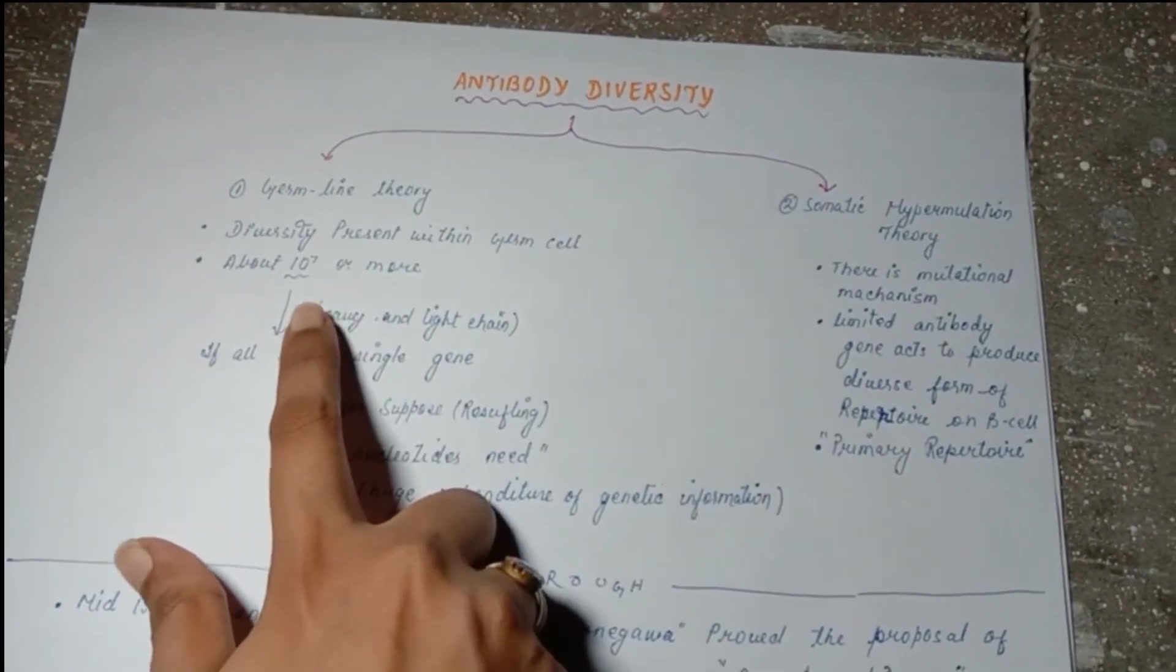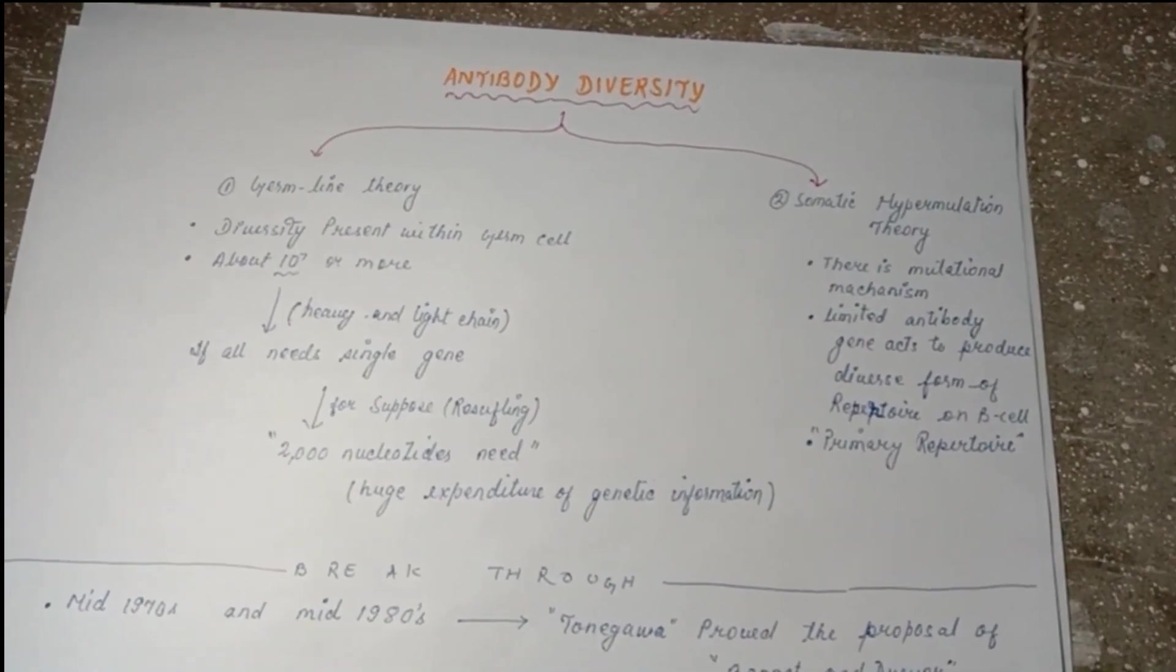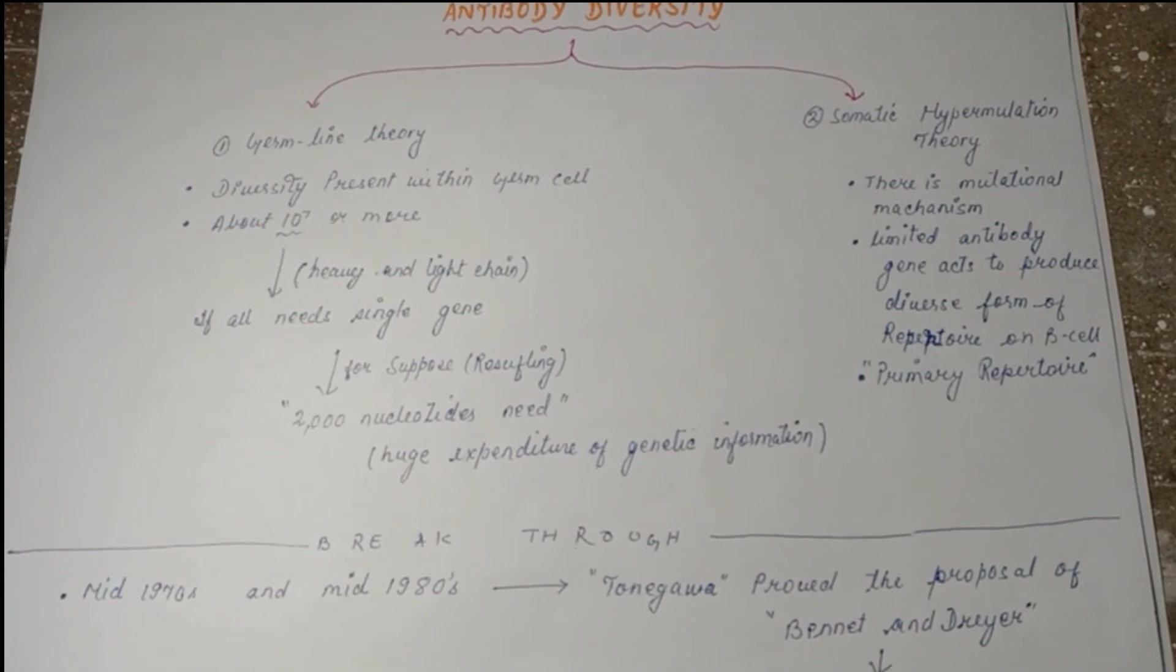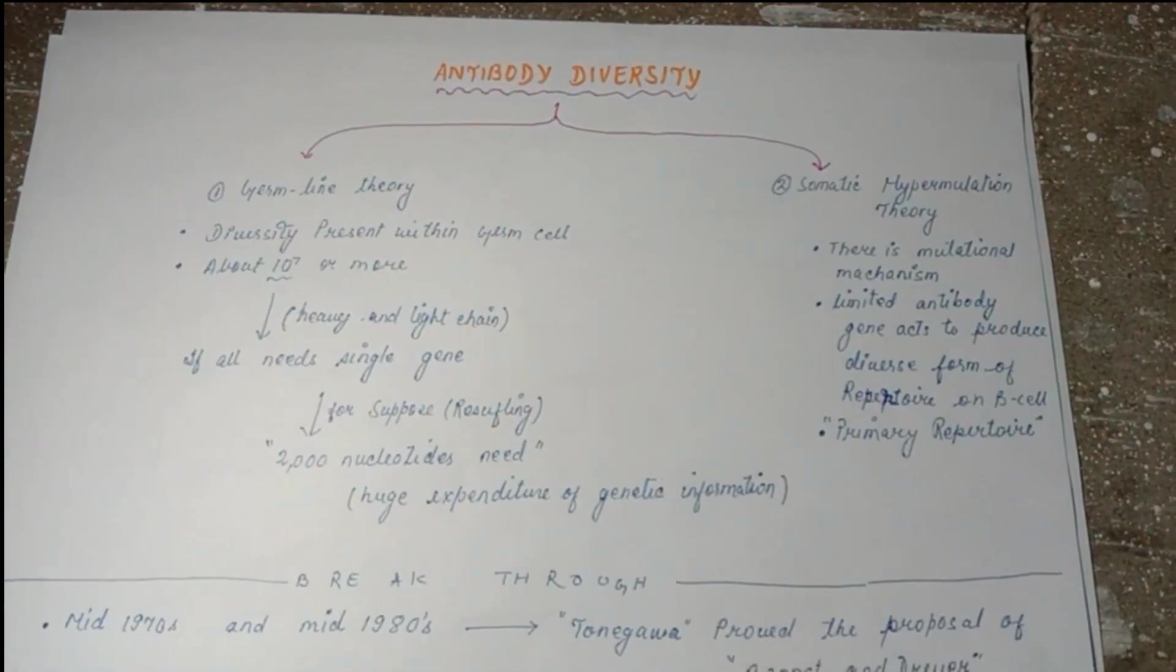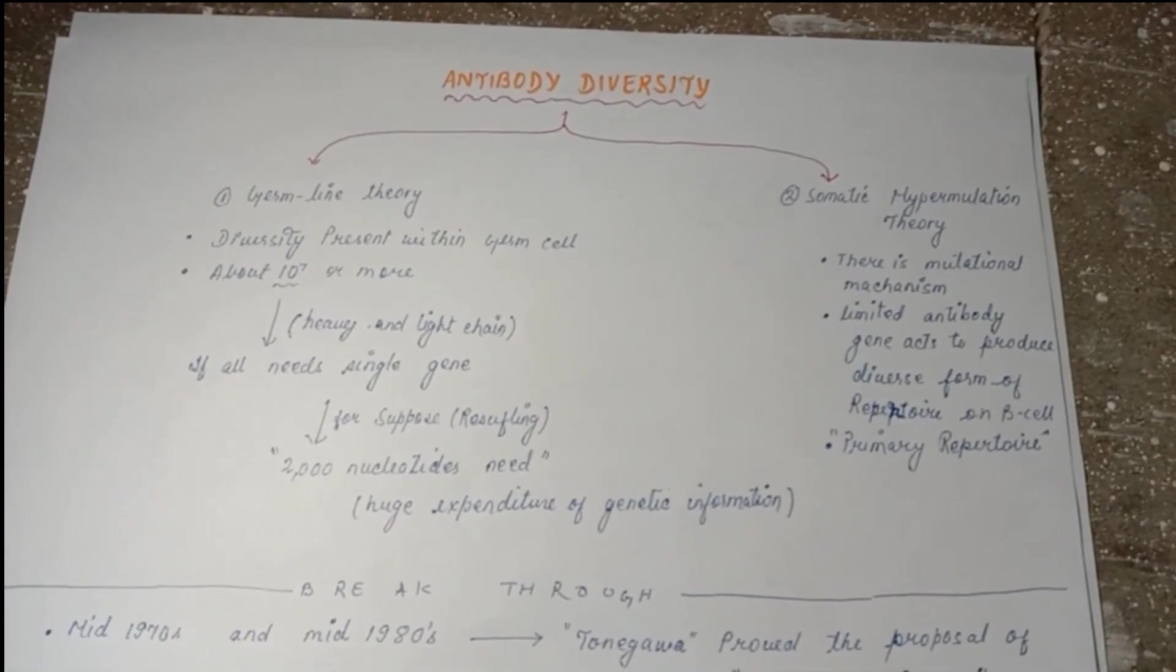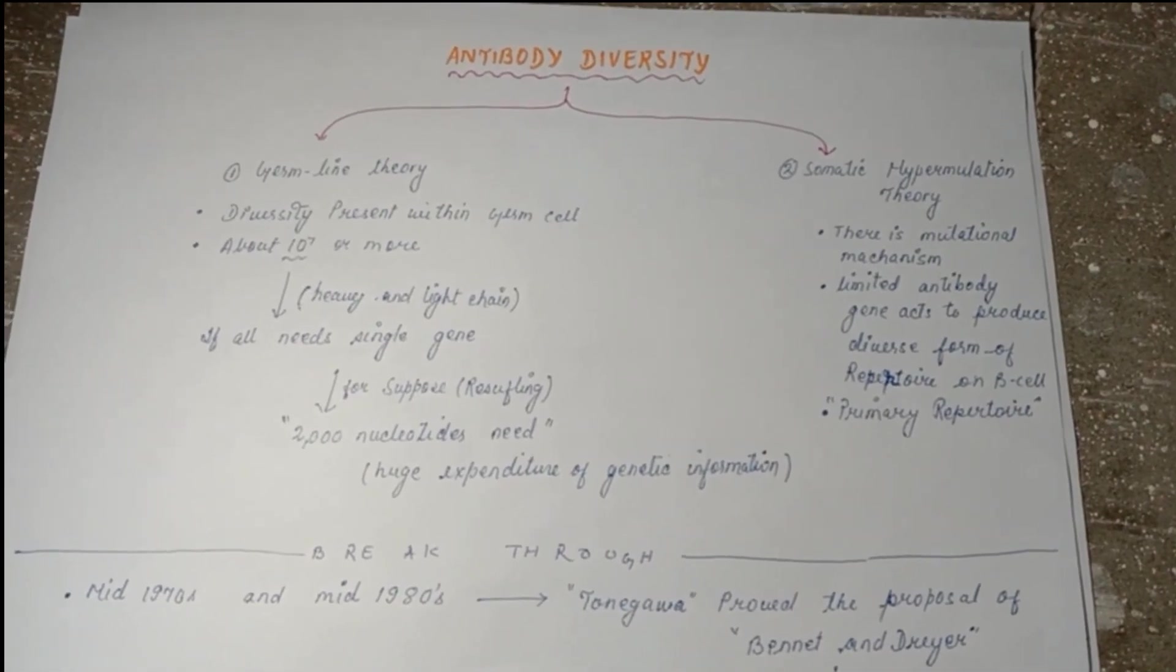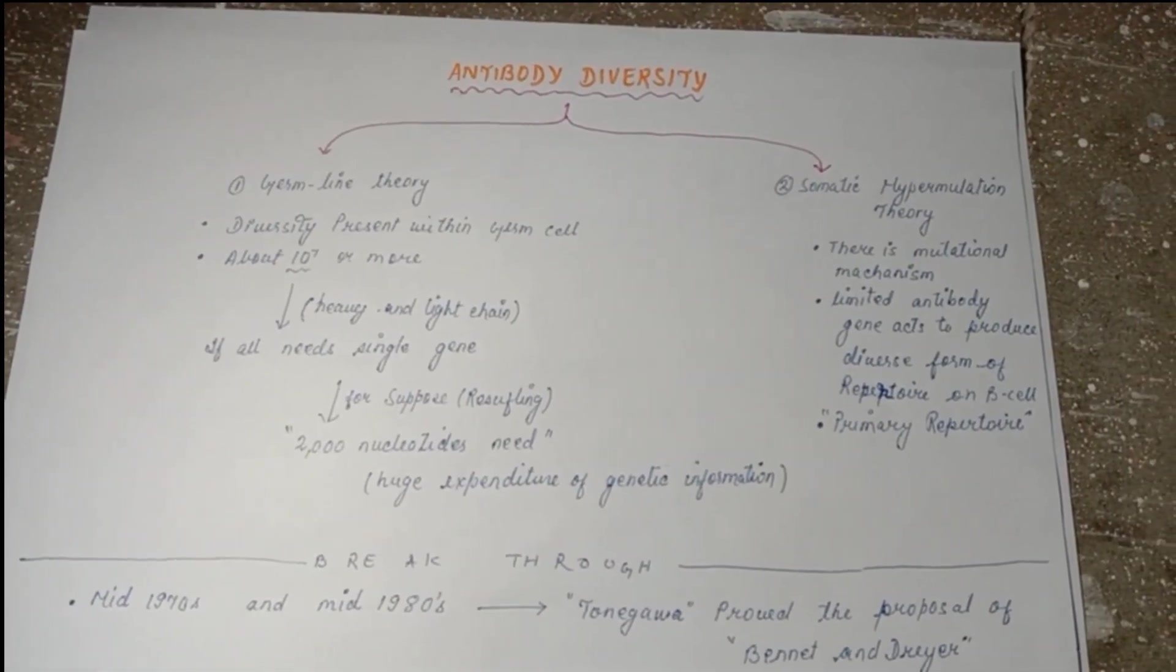Germline theory explains that there is every gene which is present in the germ cell for antibody formation. Suppose we have 10 to the power 7 antibodies. This is not the constant number. If single genes are there for heavy and light chain, we need at least 2000 nucleotides. Can you imagine how much big segment of DNA is there only for the antibody? There are other functions also in our body, not only antibody formation.